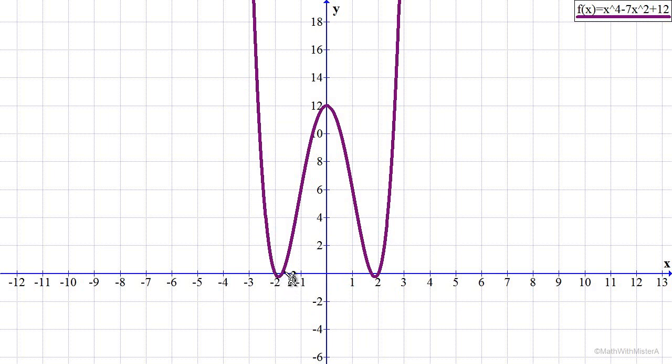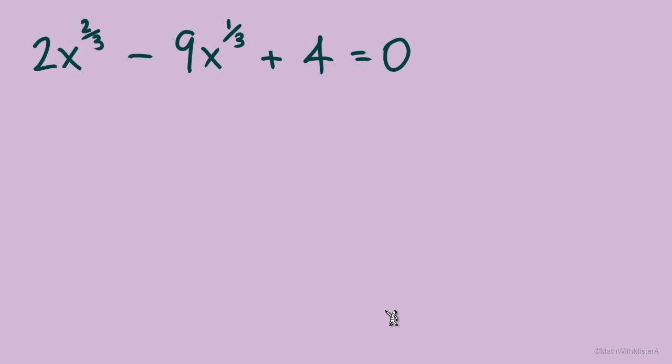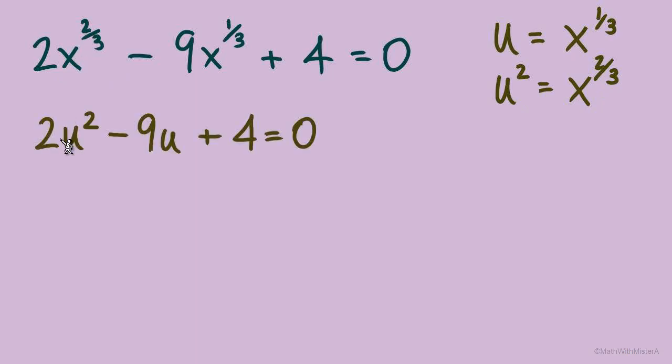Here's our next example: 2x^(2/3) - 9x^(1/3) + 4 = 0. Let's first verify it's a quadratic form. We're looking for our largest exponent to be twice as large as the next, and that looks good. Two-thirds is twice as large as one-third, and we do have a constant for the third term. Let's think about the substitution. In place of this x^(1/3), I would like to see a variable with no exponent. So u = x^(1/3). If I square both sides, I get u^2 = x^(2/3). That will give us 2u^2 - 9u + 4 = 0.